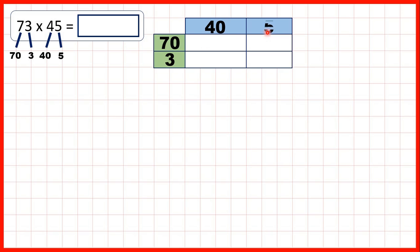For this box here, we need to work out 70 times 40. That's 2800, because 7 times 4 is 28. And then, if we have two end zeros in the question, there will be two end zeros in the answer.